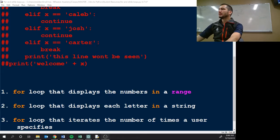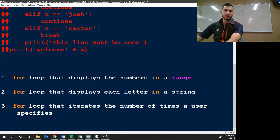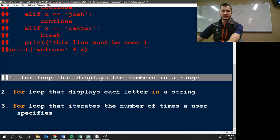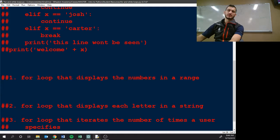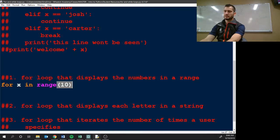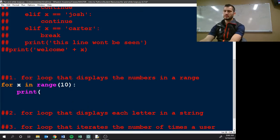And we're back. Alright, so a for loop. I'm going to comment all these out. So a for loop that displays the numbers in a range. This is for x in range 10. Print x. That's all I wanted for that one.